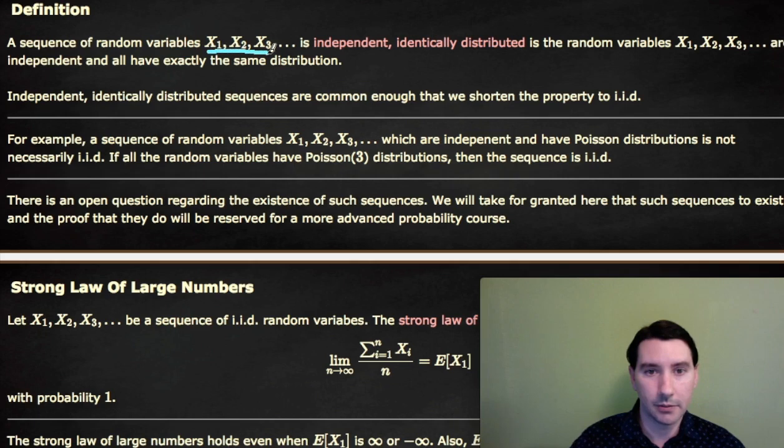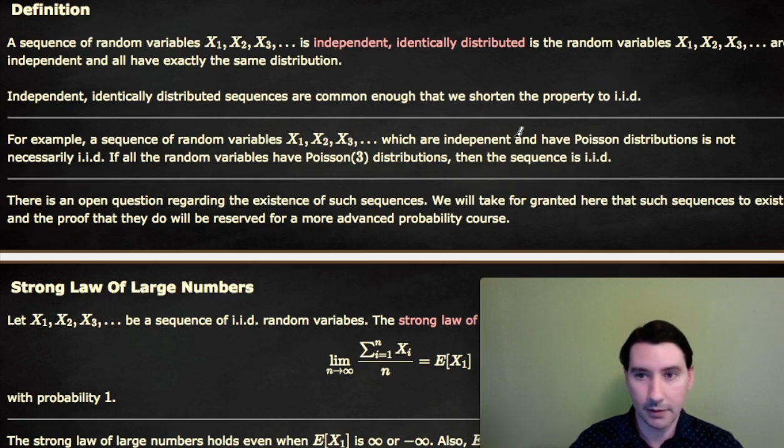So the sequence x1, x2, x3, and so on are independent and identically distributed. Independent and identically distributed random variables are studied so much in probability that they're even given a special shorthand IID. So that's the abbreviation for independent and identically distributed.